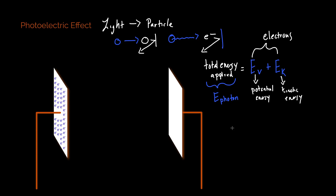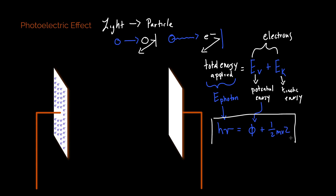Before we get into the experiment, I'm going to write out the formula that I hope to prove through this experiment: the E photon, which we can express as H nu, is equal to the potential energy — that is the interaction between the electrons and the surface of the metal, which we give the phi (φ) term — plus the kinetic energy. That's the energy the electron has when it is ejected from the metal surface, and that is going to be one-half mv squared. This is our working formula for this interaction.